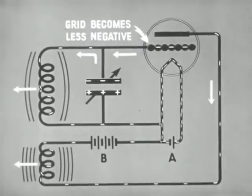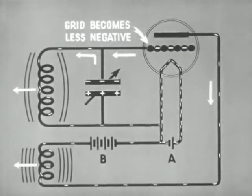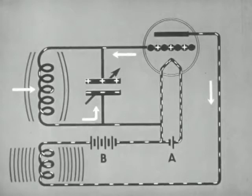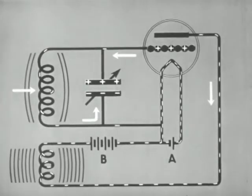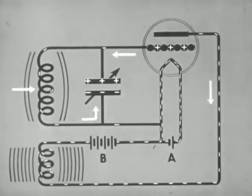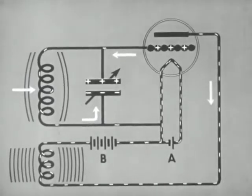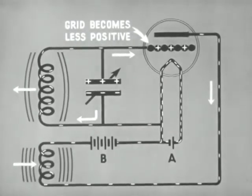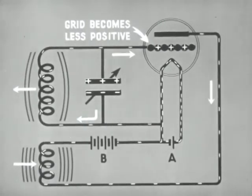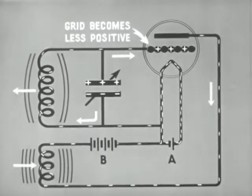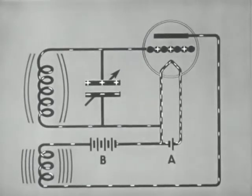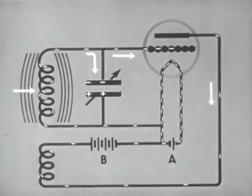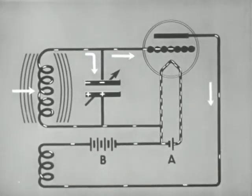Thus the grid becomes less negative and more plate current flows. When the plate current reaches maximum, there is no change in the field, hence no current is induced in the grid coil. The field of the grid coil collapses and helps to charge the condenser. Now the condenser discharges and the radio frequency current in the grid circuit changes direction. The grid becomes less positive and this reduces the plate current. The collapsing field of the plate coil assists in building up the current in the grid circuit. As the grid reaches a high negative charge, the plate current is virtually cut off. The field of the grid coil collapses and charges the upper plate of the condenser, completing the entire cycle.